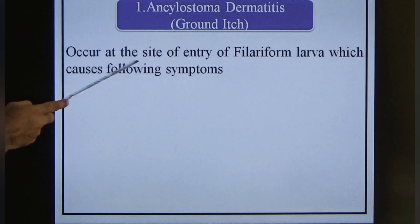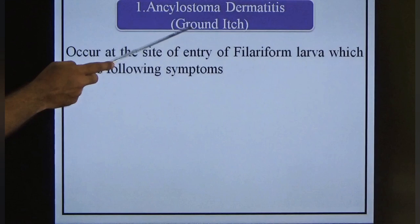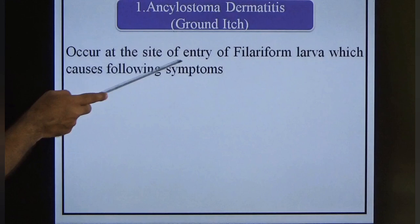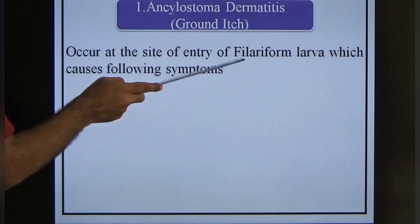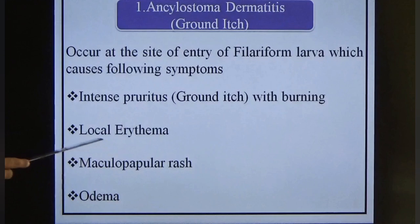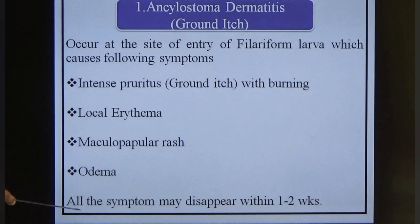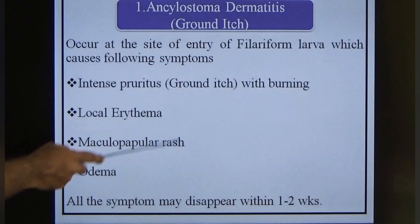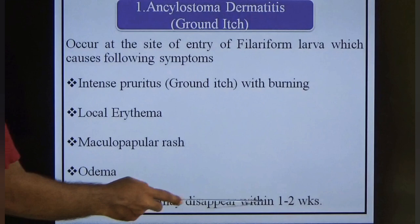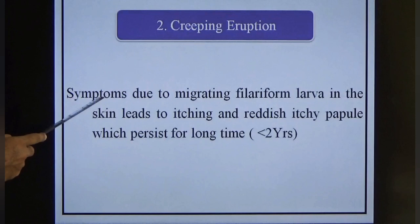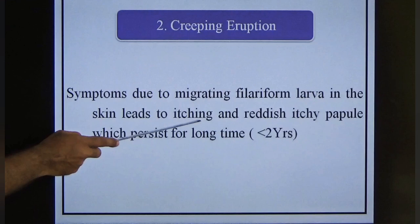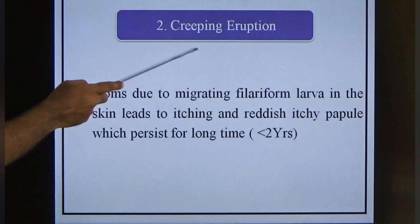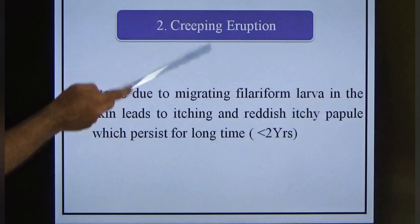Migrating larva at the site of skin entry causes intestinal pruritus with burning pain, local erythema, maculopapular rash, and edema. All symptoms may disappear within one to two weeks. Creeping eruptions are symptoms due to the migrating filariform larva in the skin, causing itching and redness papules that persist for a long time as the larva migrates upward via the lymphatic system.